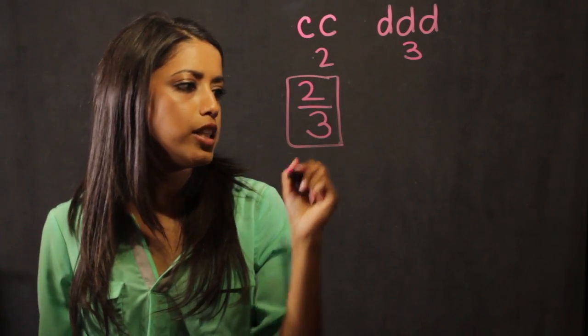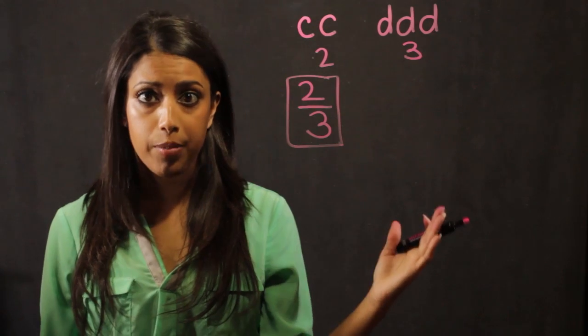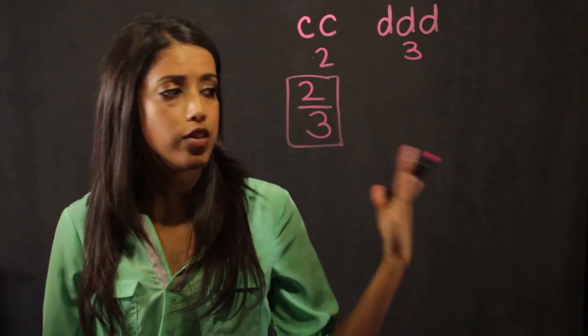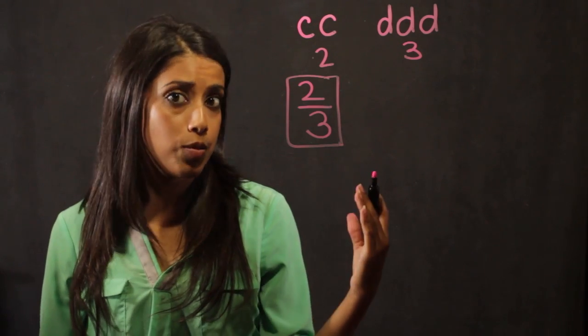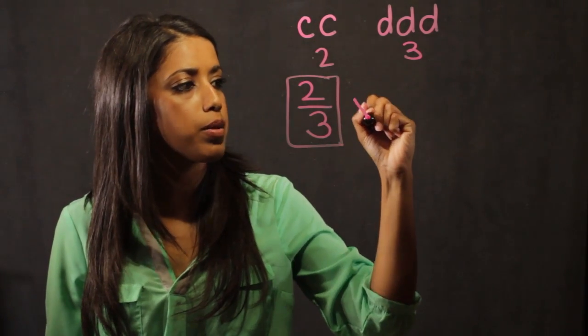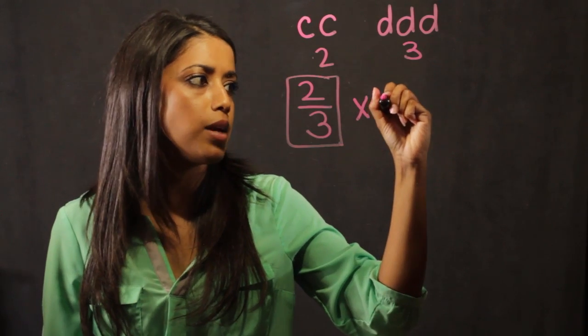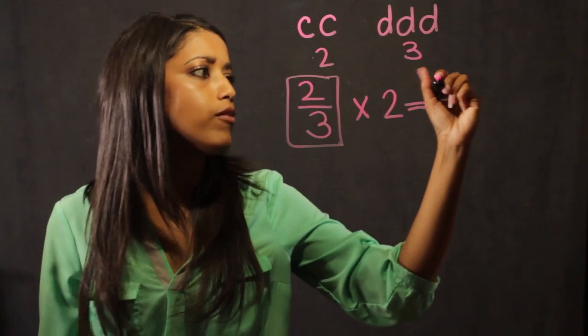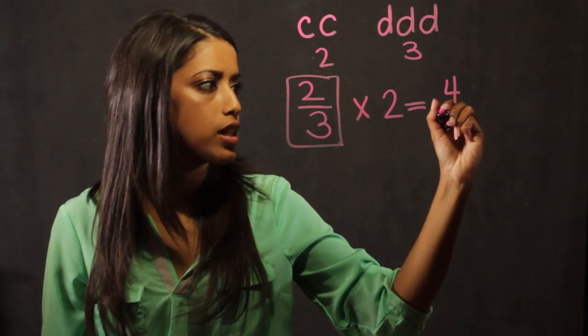The nice thing about having a ratio is you can do what's called extrapolation, which is just a fancy term for predicting a future value. So if I know that over the next two months the ratio is going to increase by two, what I simply do is multiply my original ratio by the number two. So I can say that two months from now there will be four cats for every six dogs.